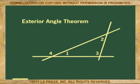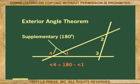So, if the linear pair made by the exterior angle and the interior angle next to it are supplementary, then the exterior angle will be the difference between 180 and the interior angle next to it.